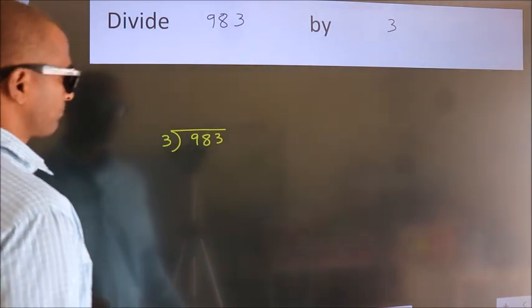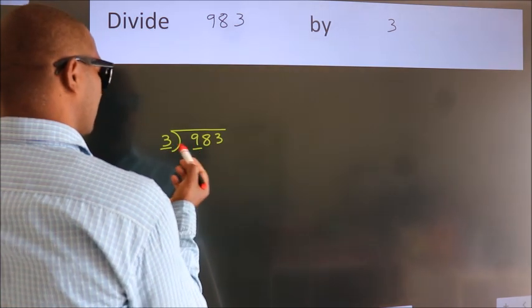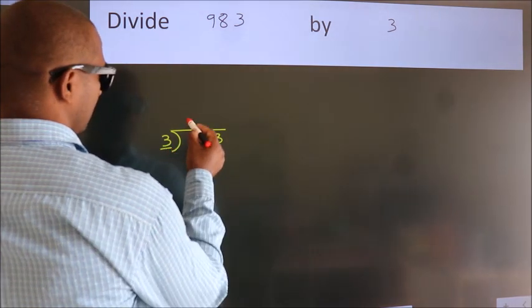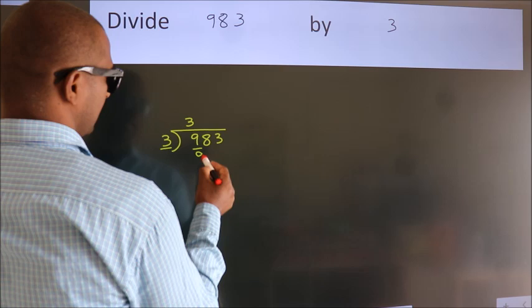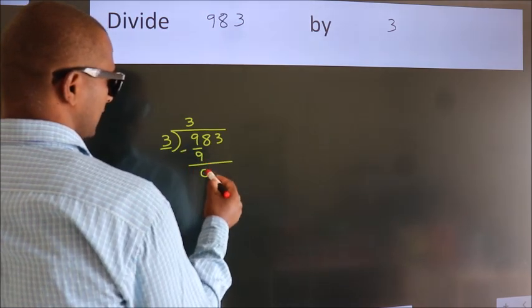Next, here we have 9, here 3. When do we get 9? In 3 table. 3 times 3 is 9. Now we should subtract. We get 0.